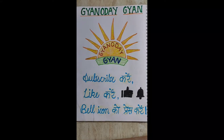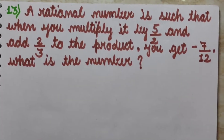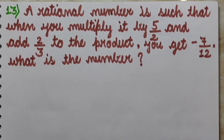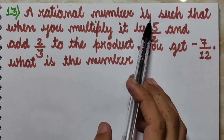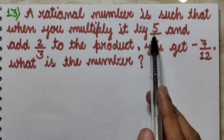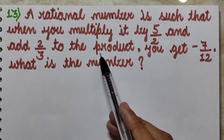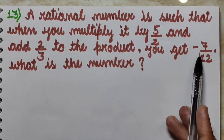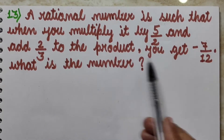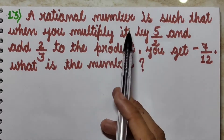Hello friends, this is Maulisha Parma from Gyan. We are starting the next question of Exercise 2.2 — question number 13. A rational number is such that when you multiply it by 5 upon 2 and add 2 upon 3 to the product, you get minus 7 upon 12. What is the number?